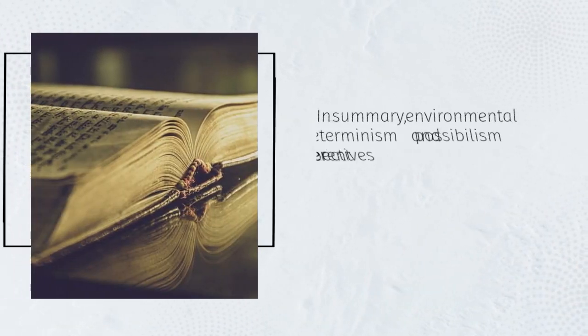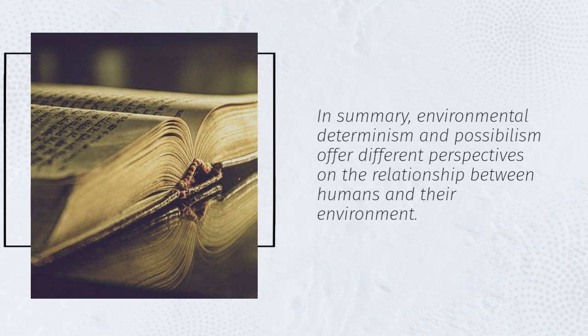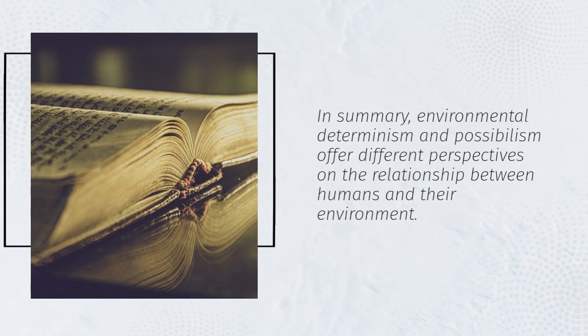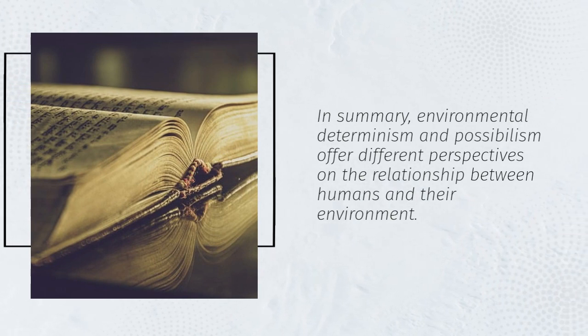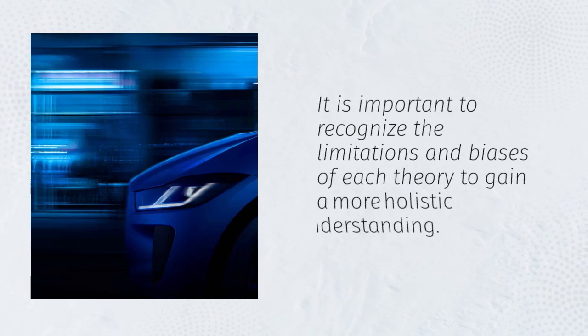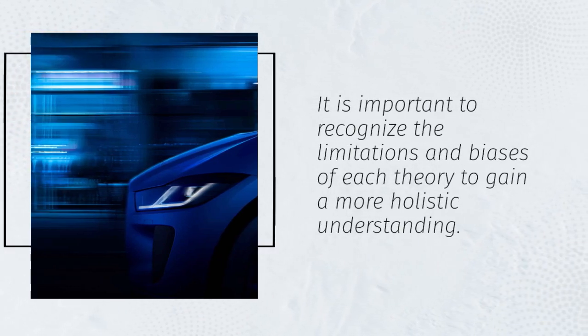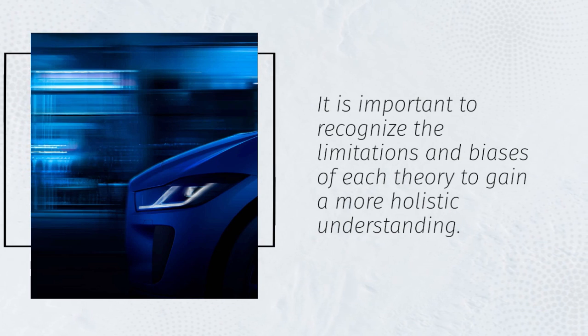In summary, environmental determinism and possibilism offer different perspectives on the relationship between humans and their environment. It is important to recognize the limitations and biases of each theory to gain a more holistic understanding.